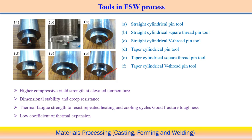When designing FSW tools, the tool material must have: high compressive yield strength at elevated temperature, good dimensional stability, high wear resistance, good thermal fatigue strength to withstand repeated heating and cooling cycles, good fracture toughness, and low coefficient of thermal expansion. All these properties must be considered when selecting a tool material for friction stir welding.